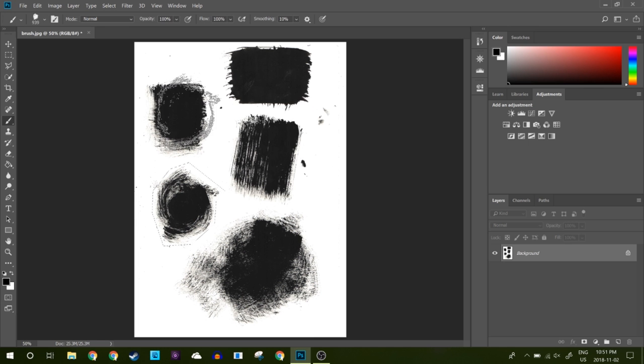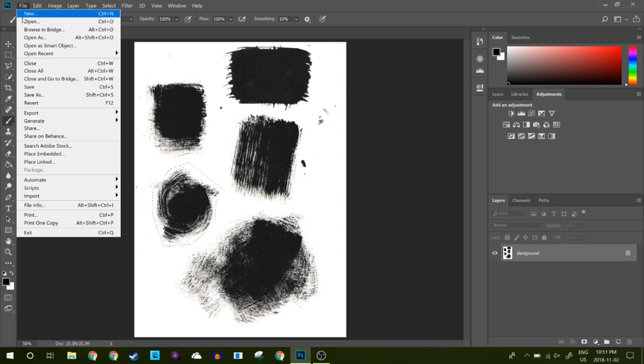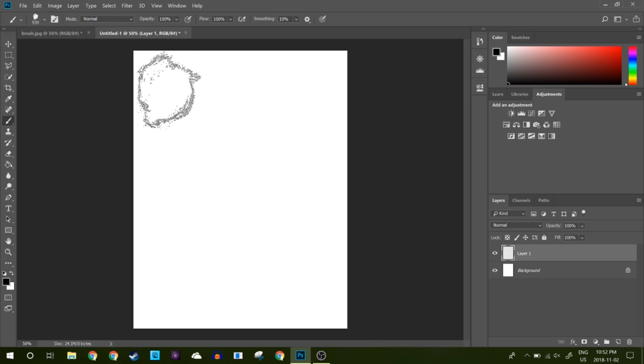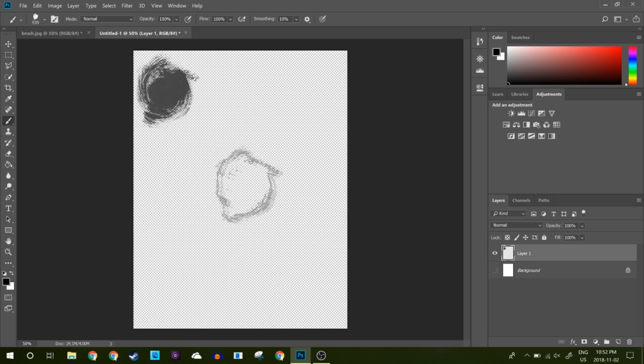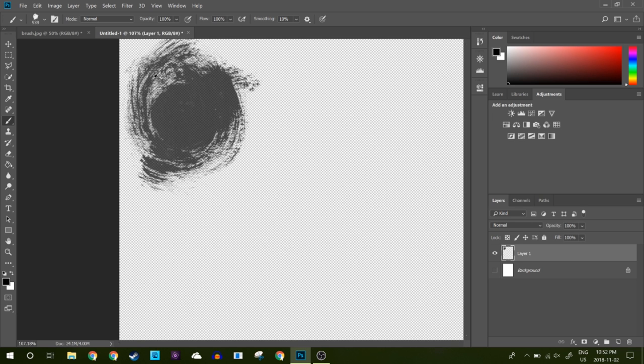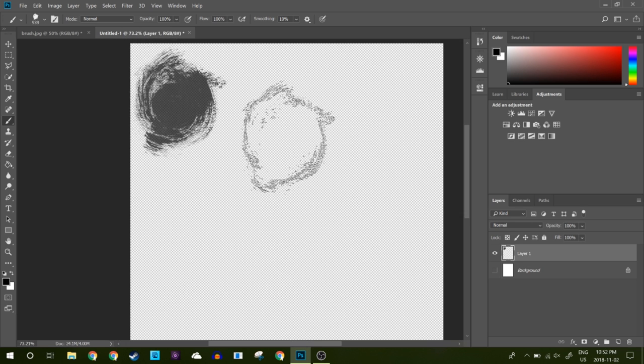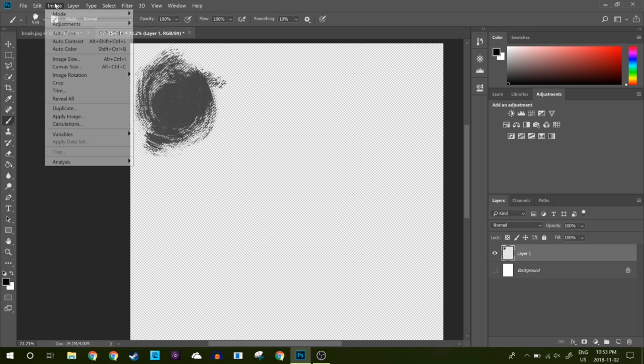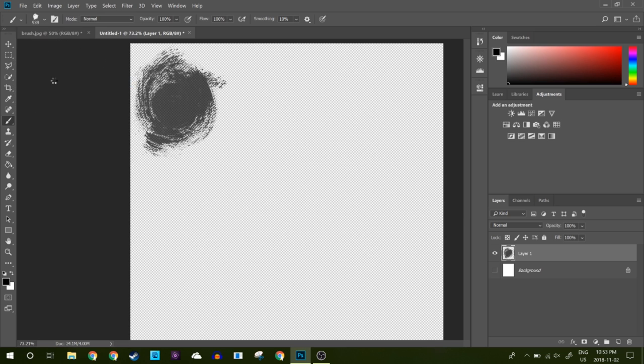I actually use Procreate to do most of my digital art because I have an iPad and I just like to take it with me, it's a really portable way of drawing, so I wanted to incorporate my own brushes into Procreate. So what I did is I took the brush, I stamped it onto an empty canvas in Photoshop, exported it as just an image, and then I brought it into Procreate.